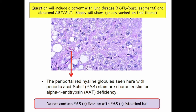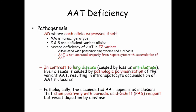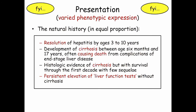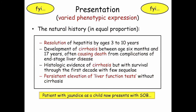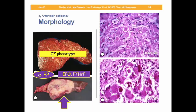Lung disease in alpha-1 affects the basilar segments — we'll cover that during pulmonary. Summary: lung disease equals loss of antielastase; liver equals pathologic polymerization, PAS-positive. What happens with these patients? They follow a full spectrum depending on phenotypic expression: resolution, cirrhosis and death, cirrhosis but survival, or just persistent abnormal liver chemistries. The classic exam scenario: a patient with jaundice as a child who is now short of breath — that's an alpha-1 question. Alpha-1 is yet another condition associated with hepatocellular carcinoma, along with elevated alpha-fetoprotein, erythrocytosis, and hypercalcemia.